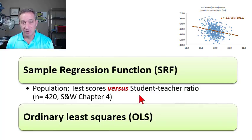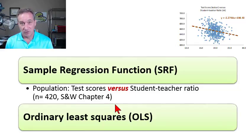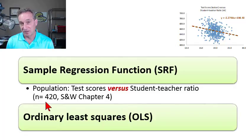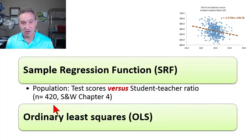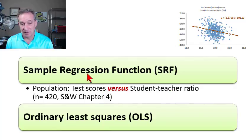To understand linear regression, the first step is to understand the theory of the sample regression function. I'll use data from Stock and Watson Chapter 4, which is assigned in the FRM syllabus. The size of the population is 420 — not an especially large population, but that's our population size. We have data on two variables for the population.